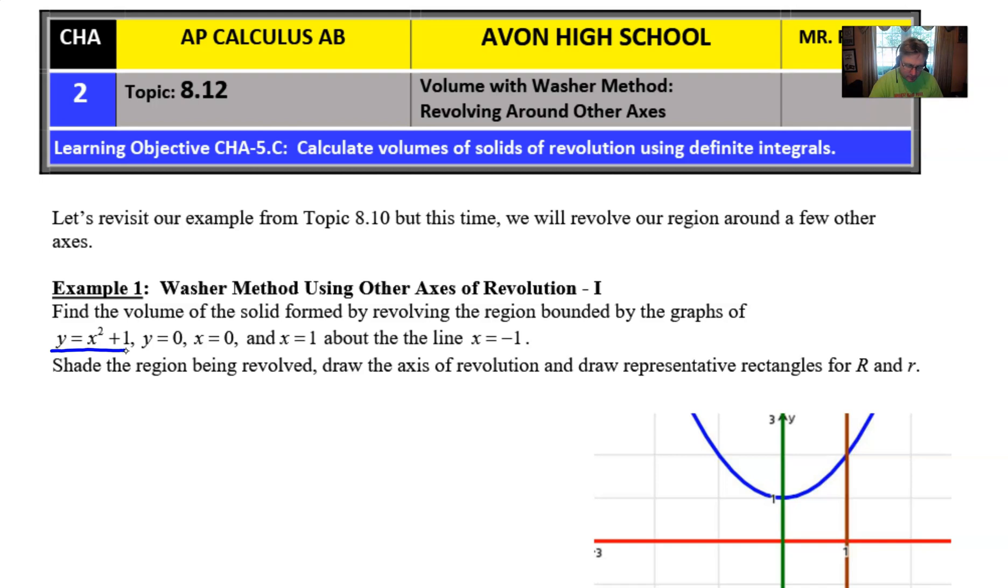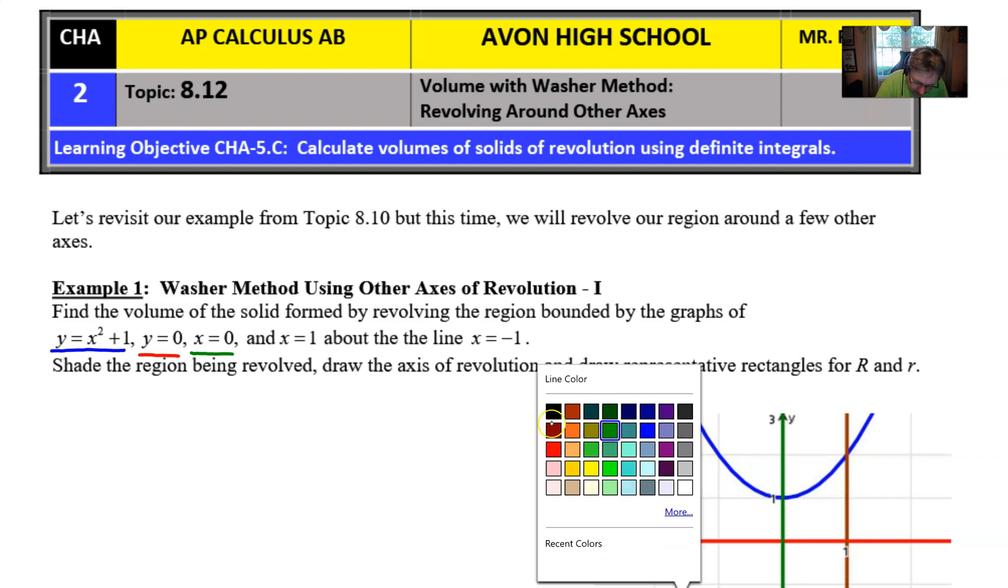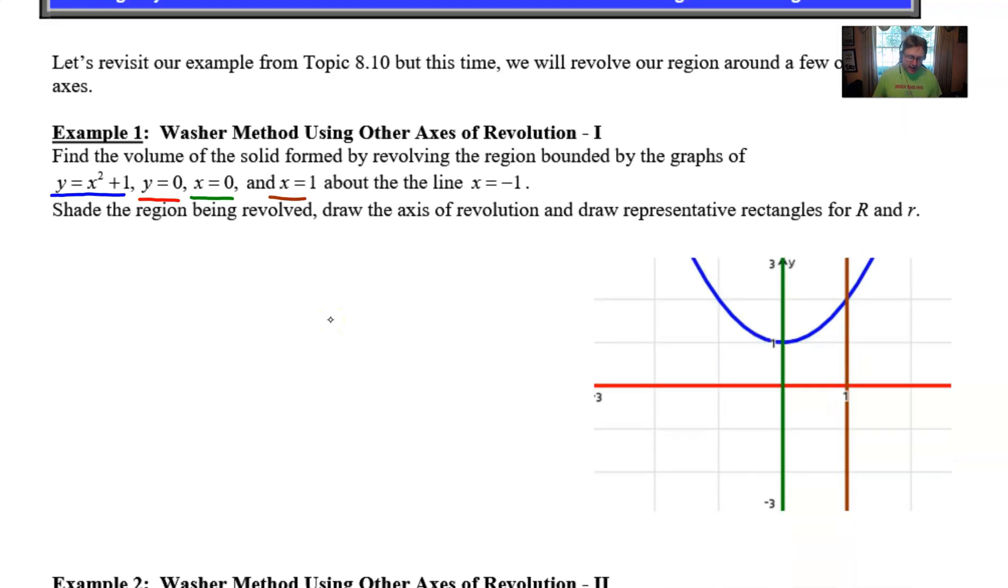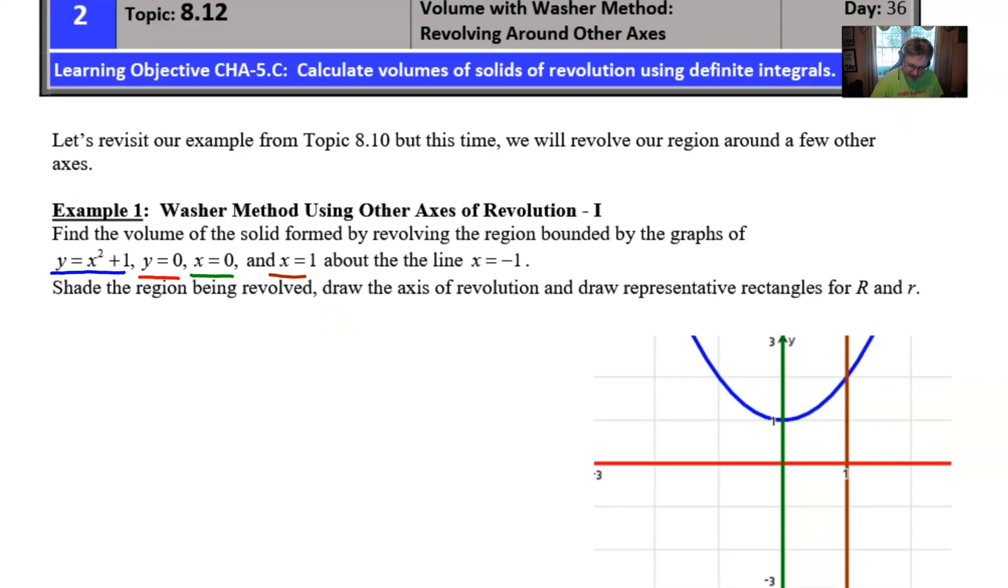Just to kind of iterate here, the blue graph is corresponding to the equation that's underlined in blue. The y equals 0 is just the x-axis or the red graph, and the green graph is the y-axis characterized by x equals 0, and then that x equals 1 is the brown graph. Now what I don't have entered into the picture is the shading, so I am going to go ahead and do that shading because it's going to become very important for us to see that this is the region that's enclosed by all four of those aforementioned equations. It's really important that we have the right shaded region.